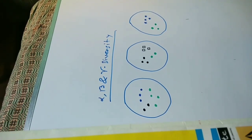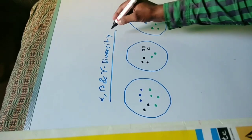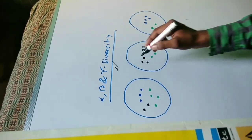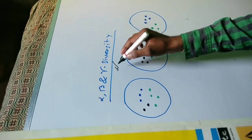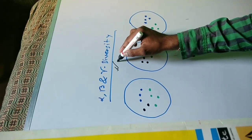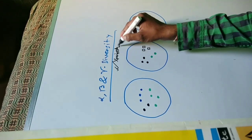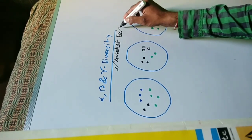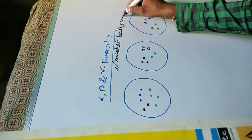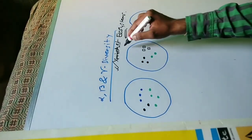Welcome back guys. In this lecture I am talking about alpha, beta, and gamma diversity. This alpha, beta, and gamma diversity is actually part of the ecological diversity. In the last video I was talking about the variety of ecosystems in a region — this is the ecological diversity.